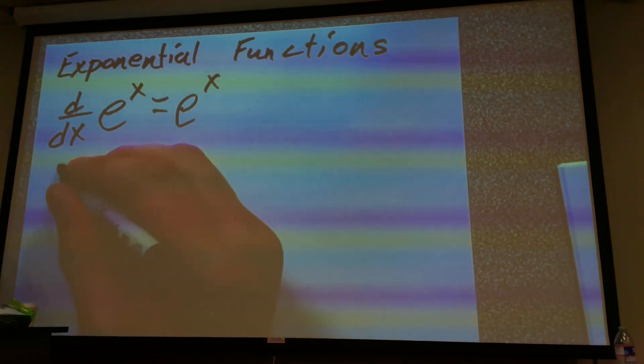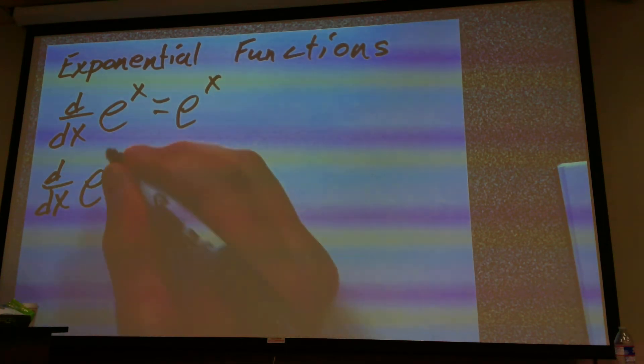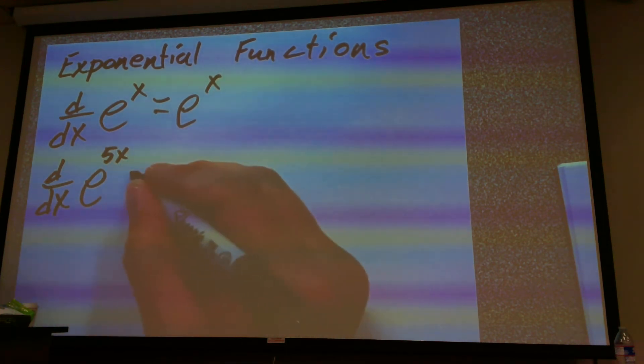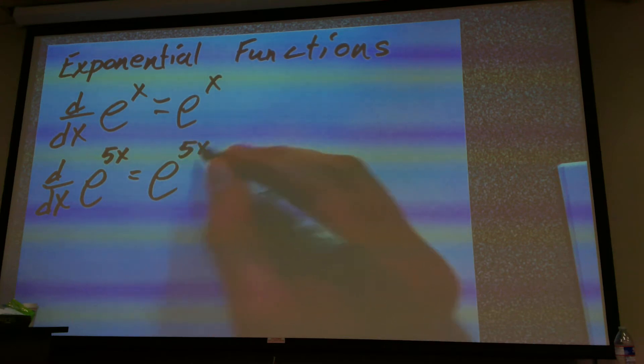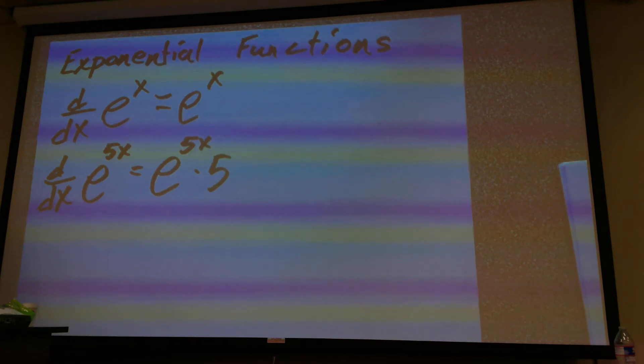So, we have another problem with this one. Let's say e to the 5x. Now, this is going to come from the chain rule, but I'm just going to go ahead and show you all this, that the derivative of e to the 5x is e to the 5x multiplied by 5. It just spits out the 5.